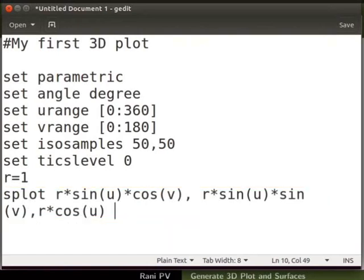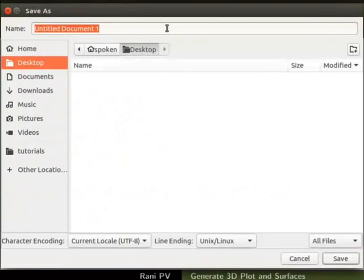Press ctrl x to save the file. A dialog box opens. I will save the file in desktop folder with file name sphere.dem. Click on save to save the script.